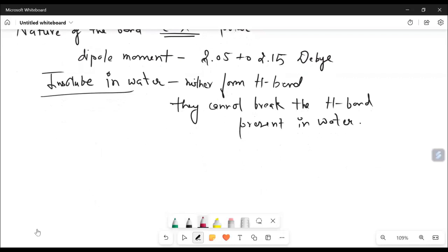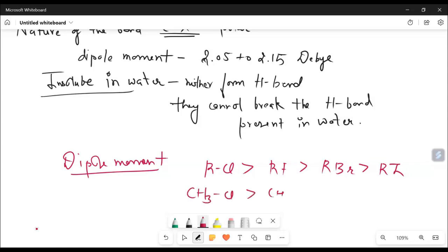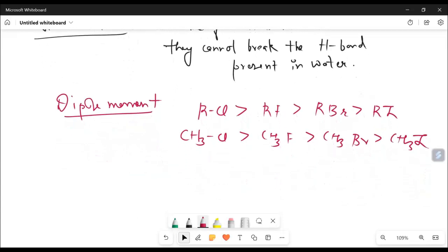If we talk about dipole moment, then dipole moment in decreasing order would be like that. RCL is the most dipole moment, then RF, then you have RBR, then this one is RI. So this is the decreasing order of dipole moment. So you can clearly see if we have R as a CH3, you have CH3-CL, then you have CH3-F, then you have CH3-BR, then you have CH3-I.